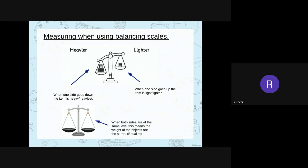If you have a look at this scale here, on a balancing scales, you have two sides. When one of those sides goes down, it means that the item is heavy, heavier than the other side. On the other side, when one part of the scale goes up, it means that the item is lighter.